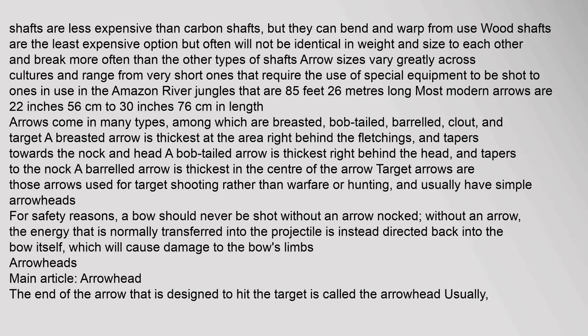Aluminum shafts are less expensive than carbon shafts, but they can bend and warp from use. Wood shafts are the least expensive option but often will not be identical in weight and size to each other and break more often than the other types. Arrow sizes vary greatly across cultures and range from very short ones that require special equipment to be shot, to ones in use in the Amazon River jungles that are 8.5 feet (2.6 meters) long.